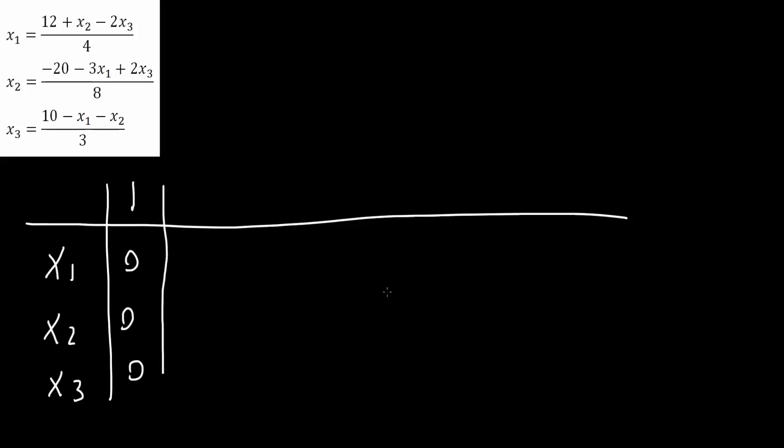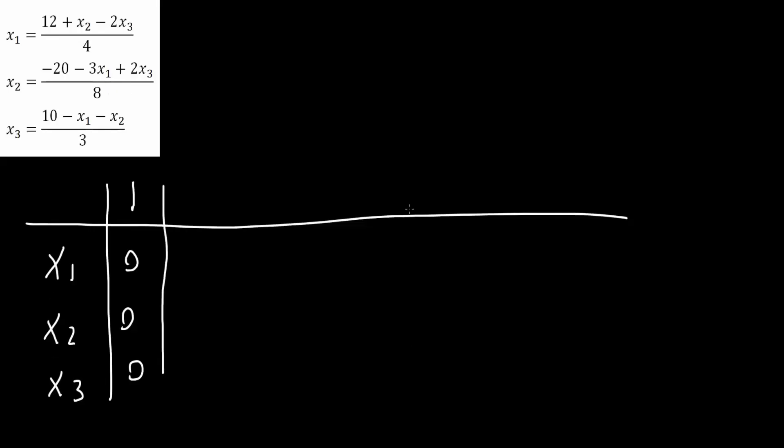And so now we will construct a table. So we want to solve x1, x2, x3, and we will use three iterations. The first one we already know, which is 0, 0, 0. We know this because the initial guess is x1 is 0, x2 is 0, x3 is 0. And so that's one set of numbers that we know, but we want three additional iterations. So we want 2, we want 3, and we want 4. And so let's do this.